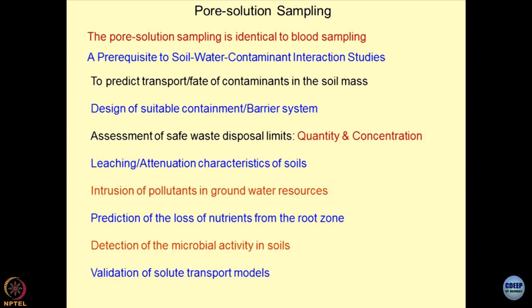One of the challenges environmental geomechanics professionals face is how to predict the loss of nutrition from the root zone due to over-irrigation. Over-irrigation leads to loss of nutrition — all nutrients present in the soils might get detached, which is equivalent to leaching of nutrition from the porous media. This type of situation has to be avoided, and pore solution sampling can assist in monitoring it.